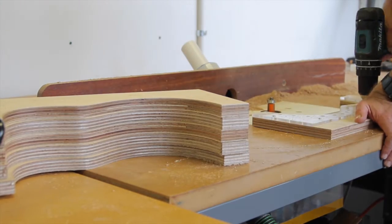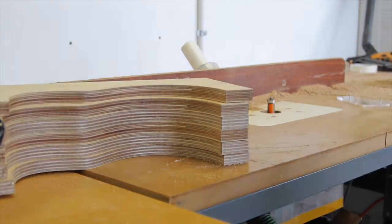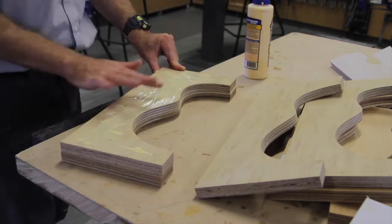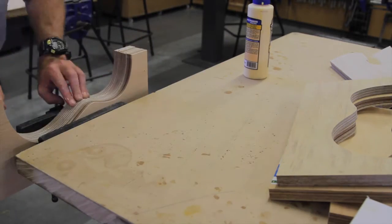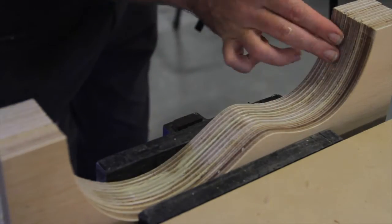Once you have done this to all six bits of plywood you can start gluing them together. Each half of the mould will be made from three bits of ply and when it is clamping just check that they are all sitting flush.